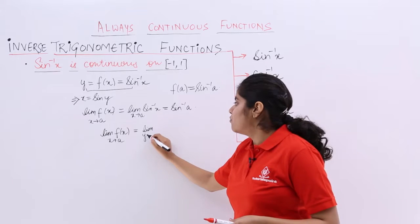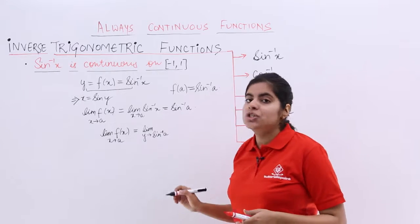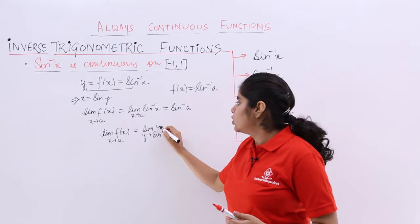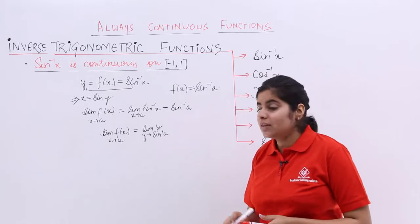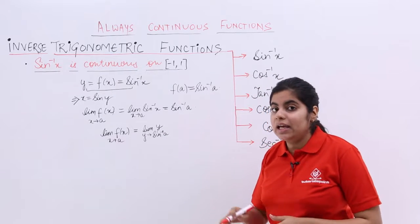So, it becomes limit y tends to sine inverse a. I have changed the limits to suit my interest. Here, it should be y. Now, if it is y here and sine inverse a is there,